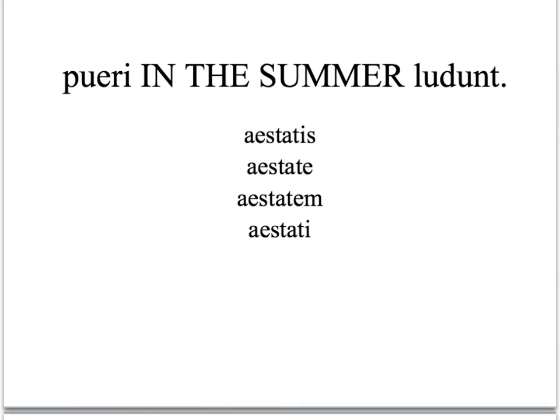Another example: 'Pueri in the summer ludent.' Notice the word 'in' — that's a big clue; it's a specific point in time. Back to our diagram: ablative of time when. So the answer is aestate.